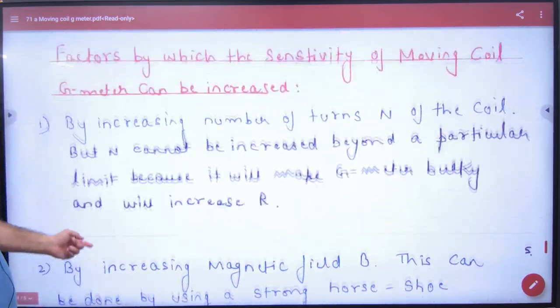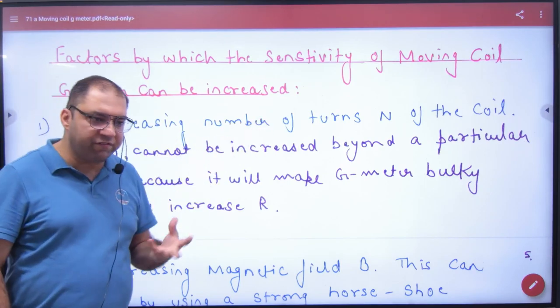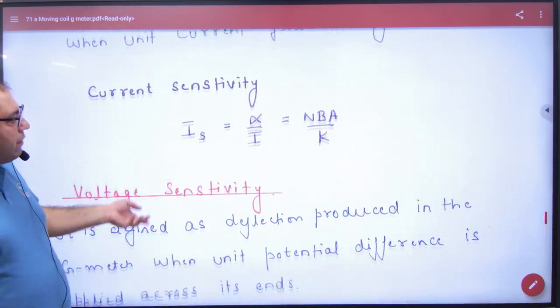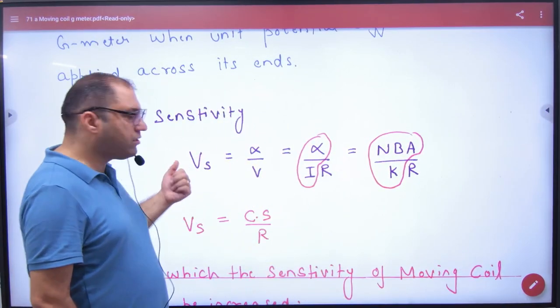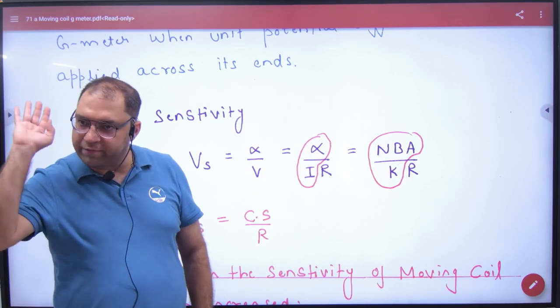So this is what we are discussing. How can you increase the sensitivity? Number one, by increasing number of turns. So if you increase the number of turns, then voltage sensitivity will increase. Current sensitivity will also increase.